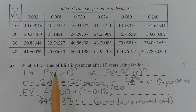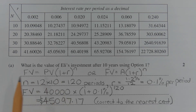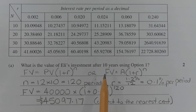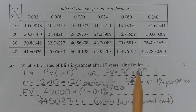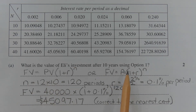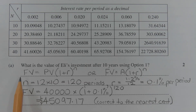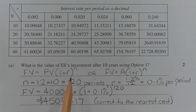To find the value of Eli's investment after 10 years using Option 1, we apply the future value formula: FV = PV × (1 + r)^n, also written as FV = A × (1 + r)^n. These two formulas are identical — A represents the principal or amount invested at the start, FV represents the future value after n compounding periods, n is the total number of compounding periods, and r is the interest rate per period.